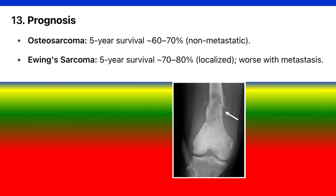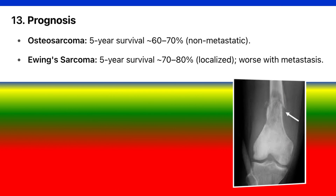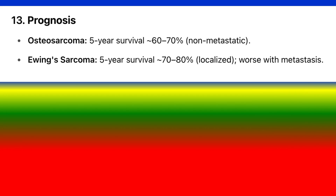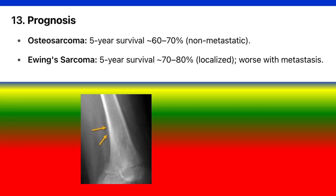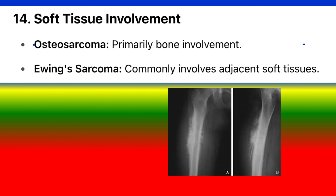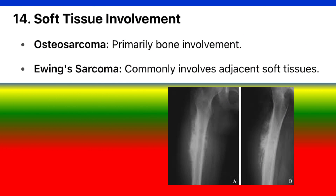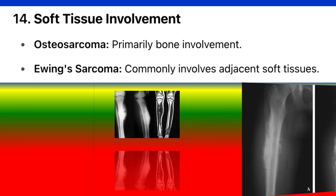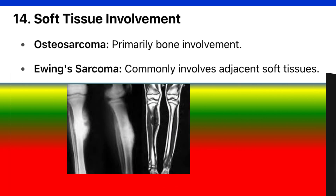13. Prognosis. Osteosarcoma: 5-year survival 60–70%, non-metastatic. Ewing's sarcoma: 5-year survival 70–80% localized, worse with metastasis. 14. Soft tissue involvement. Osteosarcoma: primarily bone involvement. Ewing's sarcoma: commonly involves adjacent soft tissues.